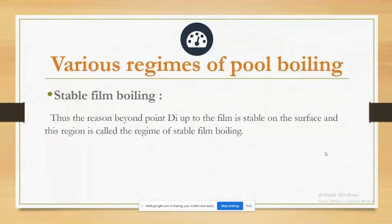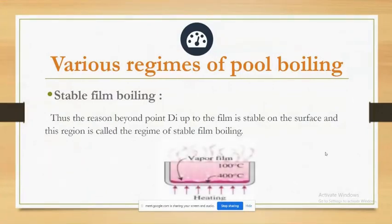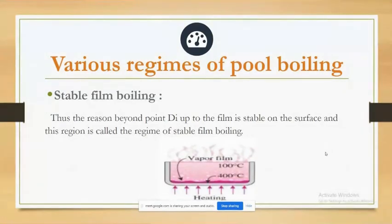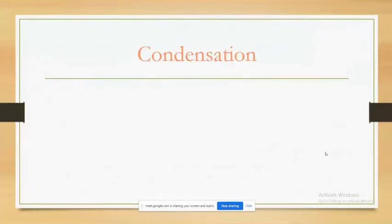Stable film boiling — beyond this point the film is stable on the surface. This regime is called the regime of stable film boiling, as shown in the diagram of vapor film versus temperature difference.